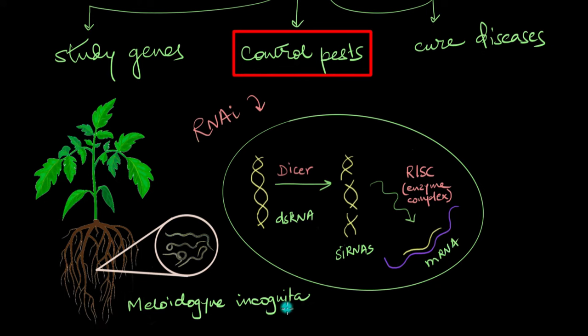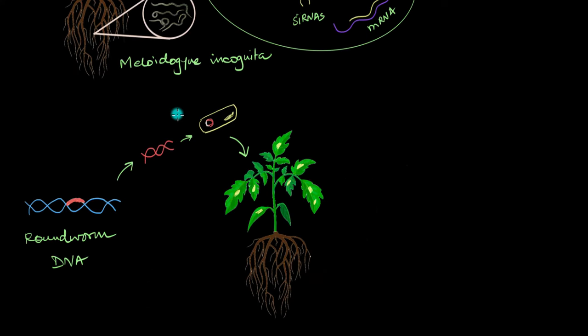Now how are we going to use this process in order to control pests? In order to use this RNA interference process against the roundworm, scientists first needed to target an essential roundworm gene—a gene which if we mess with will cause major damage to the roundworm.